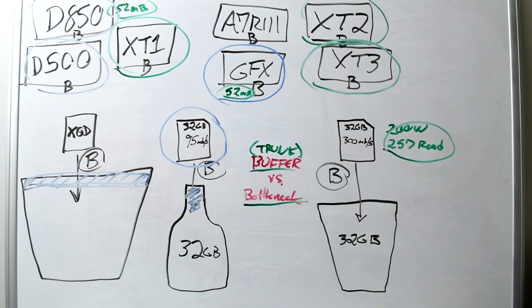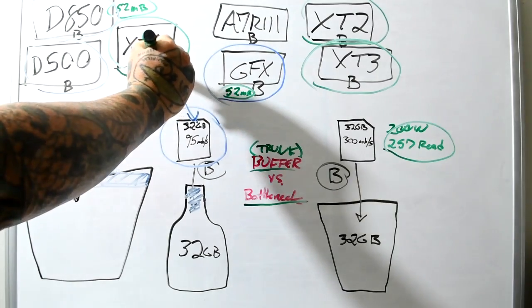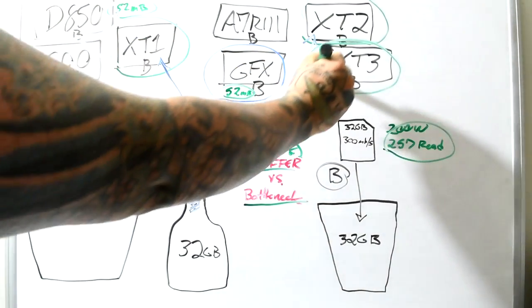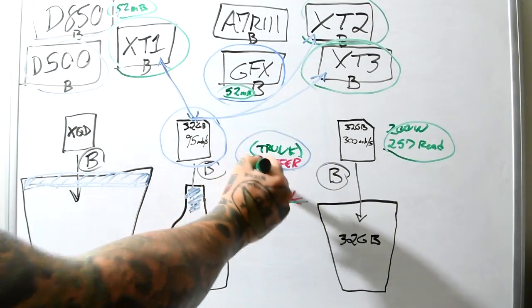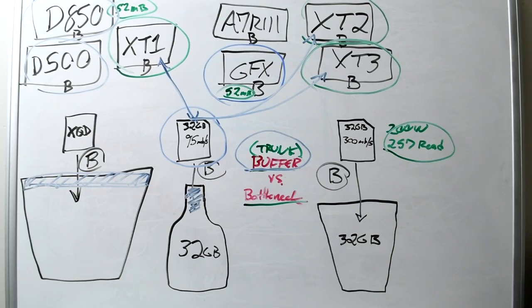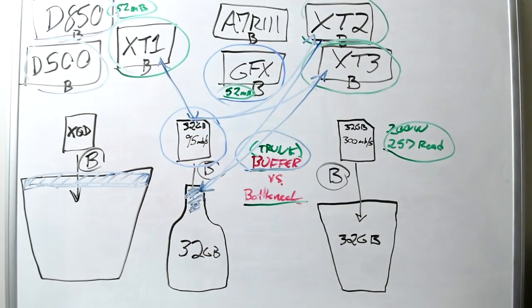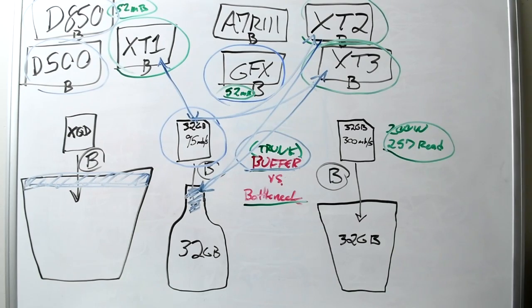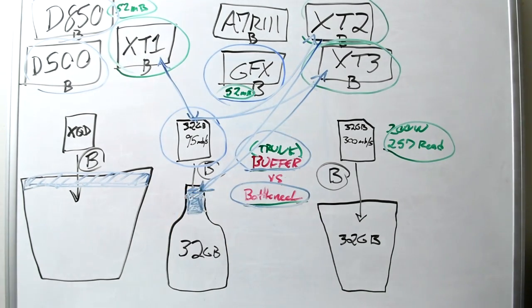You don't have an issue with the bottleneck on the media cards because XQD cards blast the hell and gone out of any SD card. I think everybody pretty much understands that, but if you're thinking about sticking these cards which you're using in your Fujifilm X-T1, and then using those same cards in your X-T2 and X-T3, you've got no issues with the trunk buffer, which is also a bottleneck.